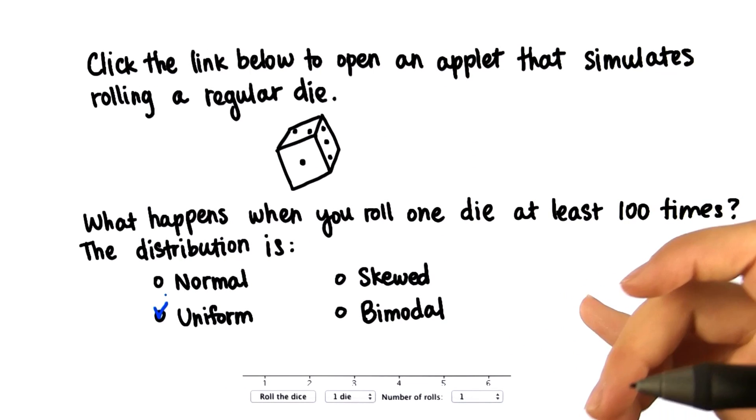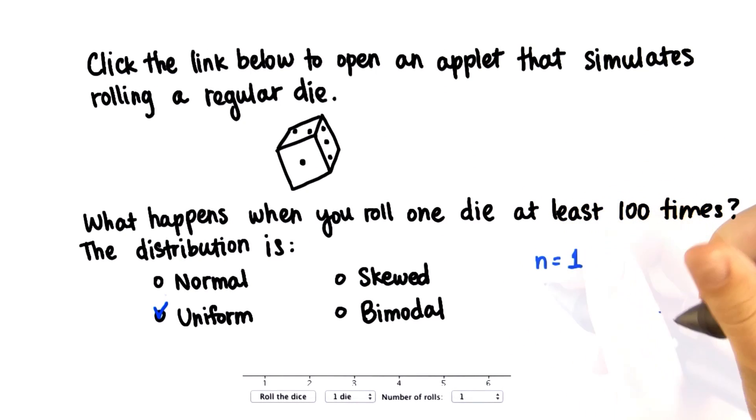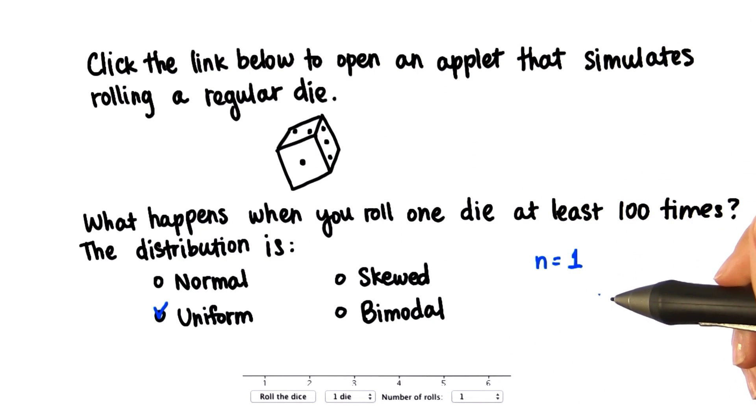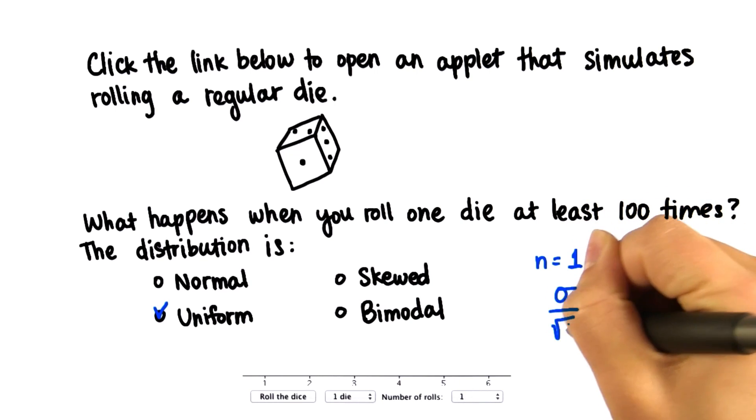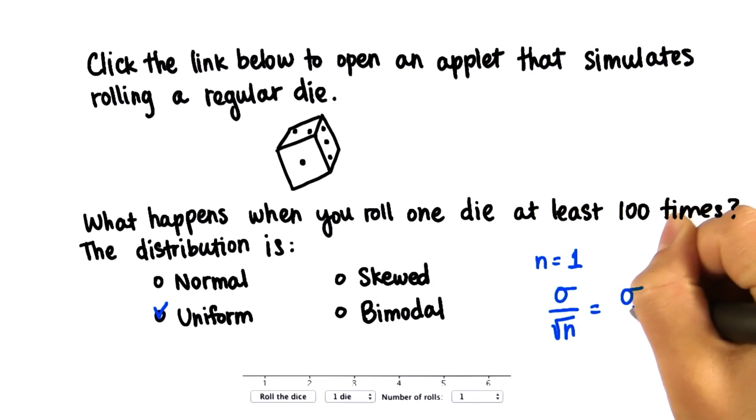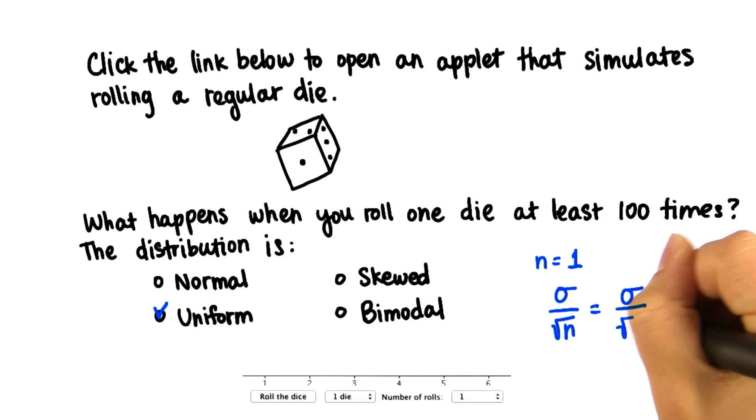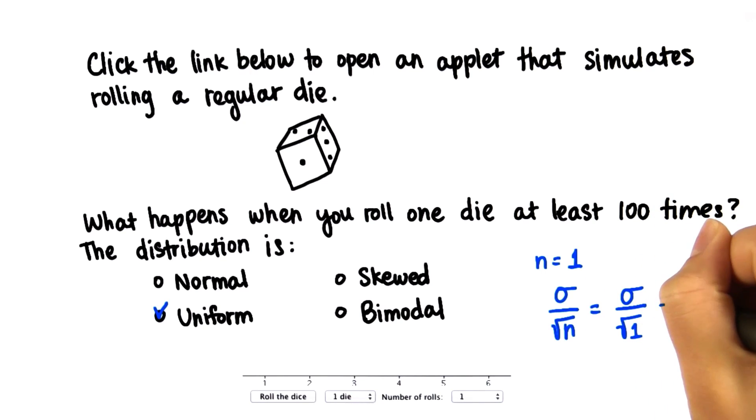In this case, our sample size was one. So we don't really have sample means right now. So essentially, the standard error is just the population standard deviation divided by the square root of one, which is just the population standard deviation.